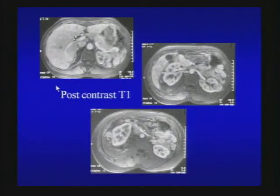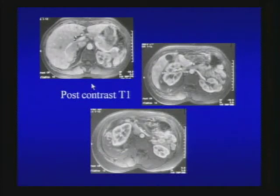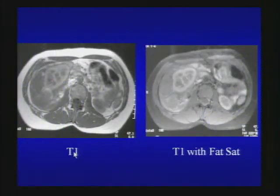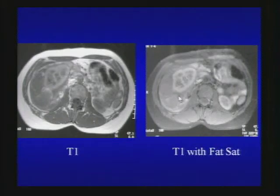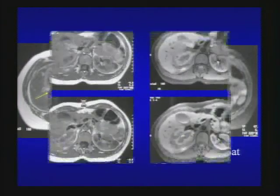Now we have multiple images for this case: bilateral renal masses with hemorrhage. Non-contrast CT shows a right perinephric hematoma and multiple renal masses — on non-contrast you can suggest a fat component. The patient got contrast-enhanced MRI demonstrating solid enhancing bilateral renal masses. Is this RCC with blood or angiomyolipoma with blood? On oral boards, ask for non-fat-sat and fat-sat T1-weighted images. A non-fat-sat T1 image demonstrates T1 hyperintensity in the exophytic right renal mass with signal loss on fat suppression — consistent with macroscopic fat in renal angiomyolipoma causing retroperitoneal hematoma.